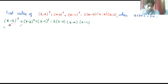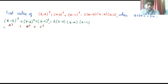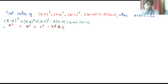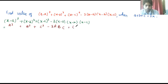If we look at this, it resembles the identity A³ plus B³ plus C³ minus 3ABC, where capital A means x minus a, capital B means x minus b, and capital C means x minus c.